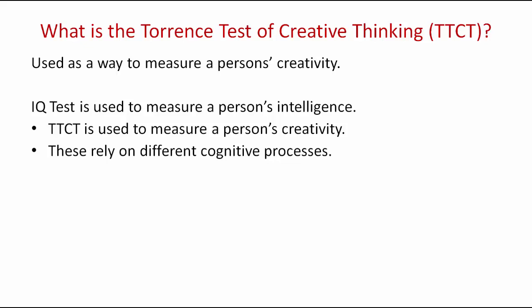Intelligence, in terms of the IQ test, primarily depends on having skills in what is called convergent thinking. In short, it relies on having the skills and knowledge to correctly answer a given question. Creativity, on the other hand, primarily depends on having skills in divergent thinking, which involves thinking of numerous, different, and unobvious ways to resolve a problem.